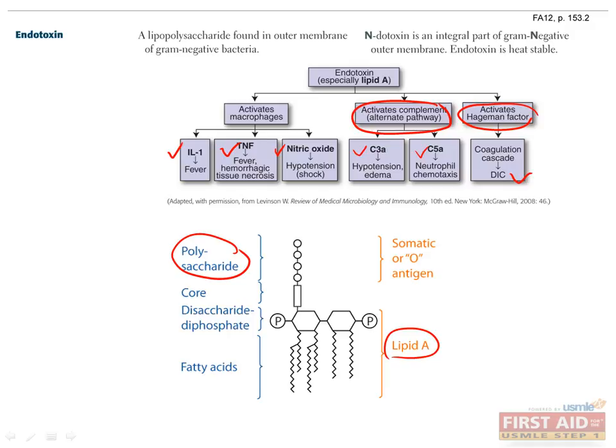DIC is covered in the hematology section, and you should remember that it occurs when coagulation factors are consumed as small clots are made throughout the body. This consumes platelets and coagulation factors so that the body cannot properly clot as it normally does, leading to abnormal bleeding throughout the body.